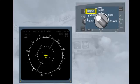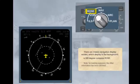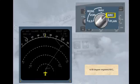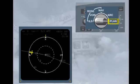Note: for training purposes, the other information has been dimmed. The three basic modes show a 90-degree segment arc, and a map plan with north at the top.